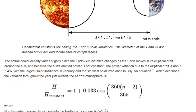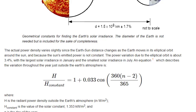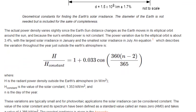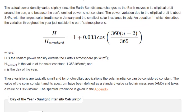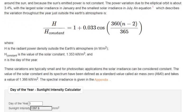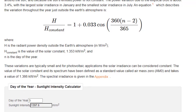The geometrical constants used in the calculation of the solar irradiance incident on the Earth are shown in the figure below. Geometrical constants for finding the Earth's solar irradiance. The diameter of the Earth is not needed but is included for the sake of completeness.